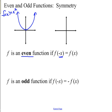Your classic odd function is F of X equals X cubed. If you put in negative 1, you get out negative 1. If you put in negative 2 and cube it, you get negative 8, and if you put in positive 2, you get positive 8. And we get this shape — and these are the classics for even and odd.